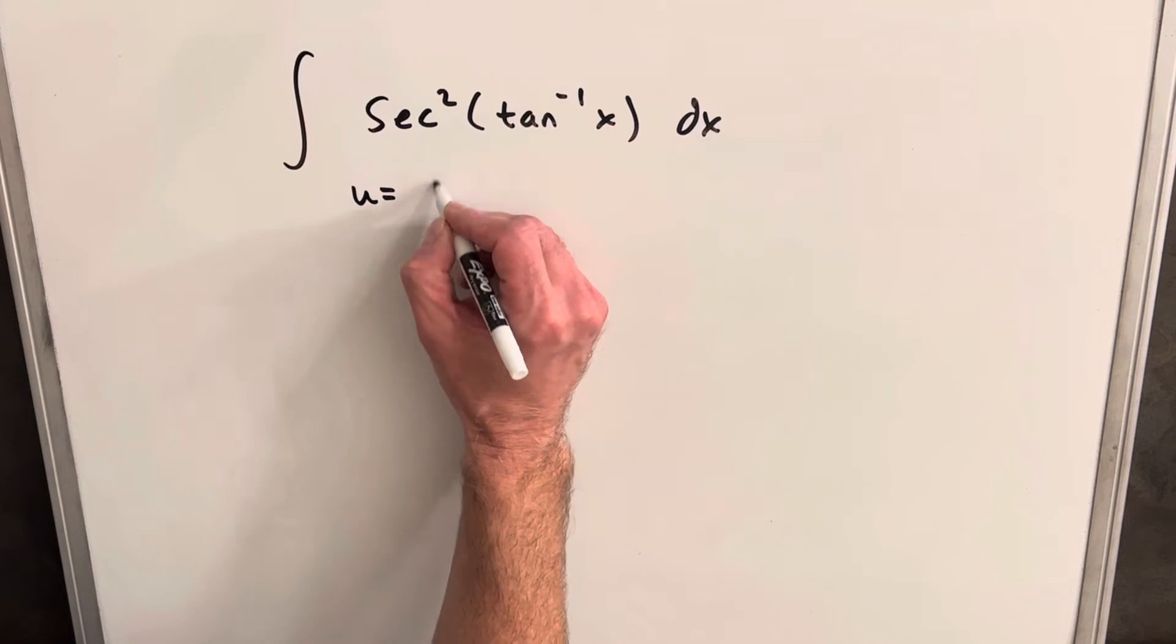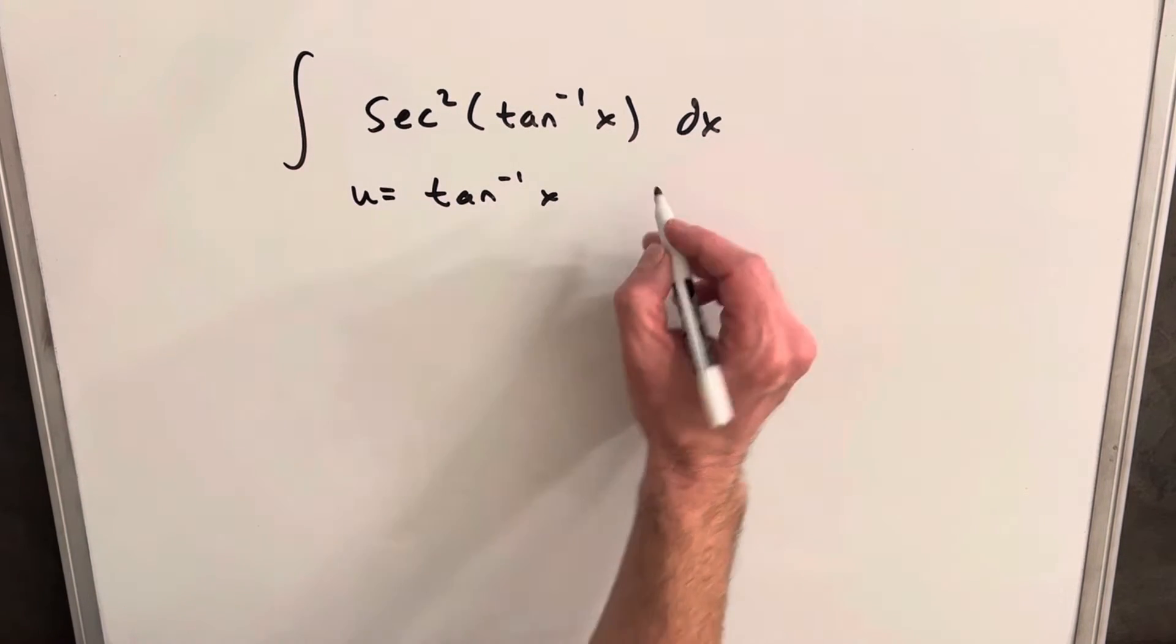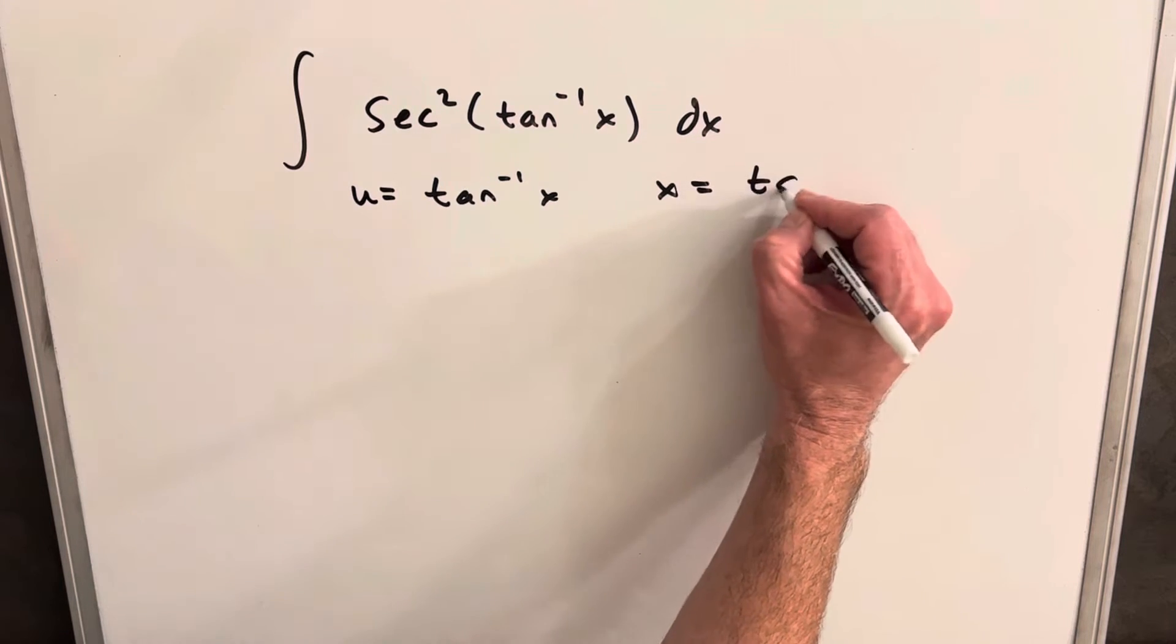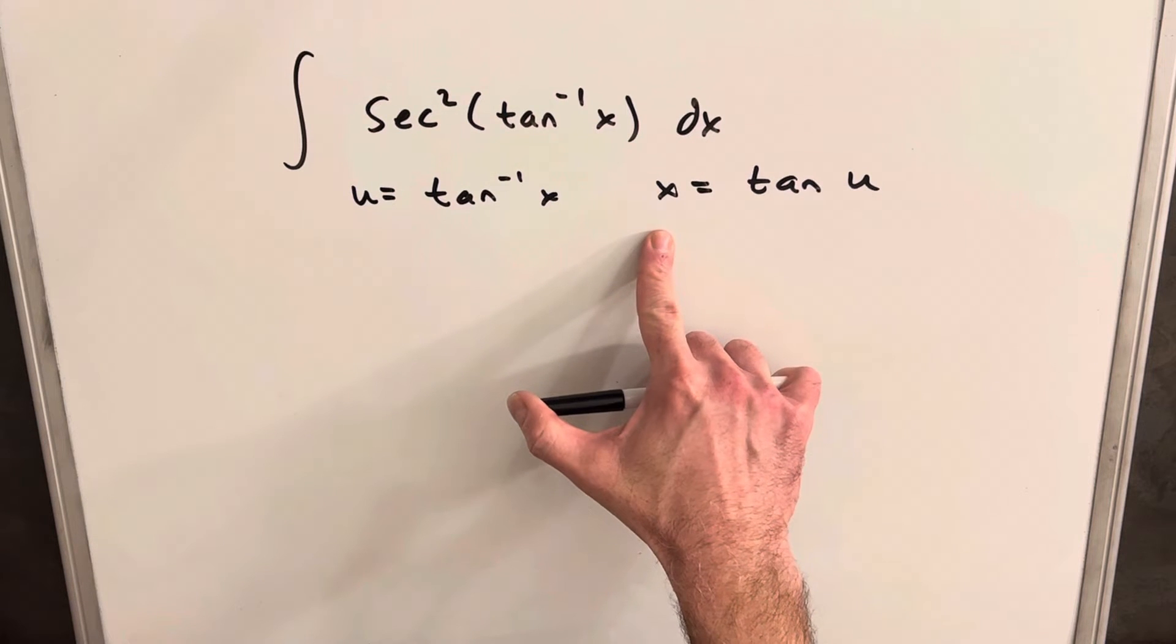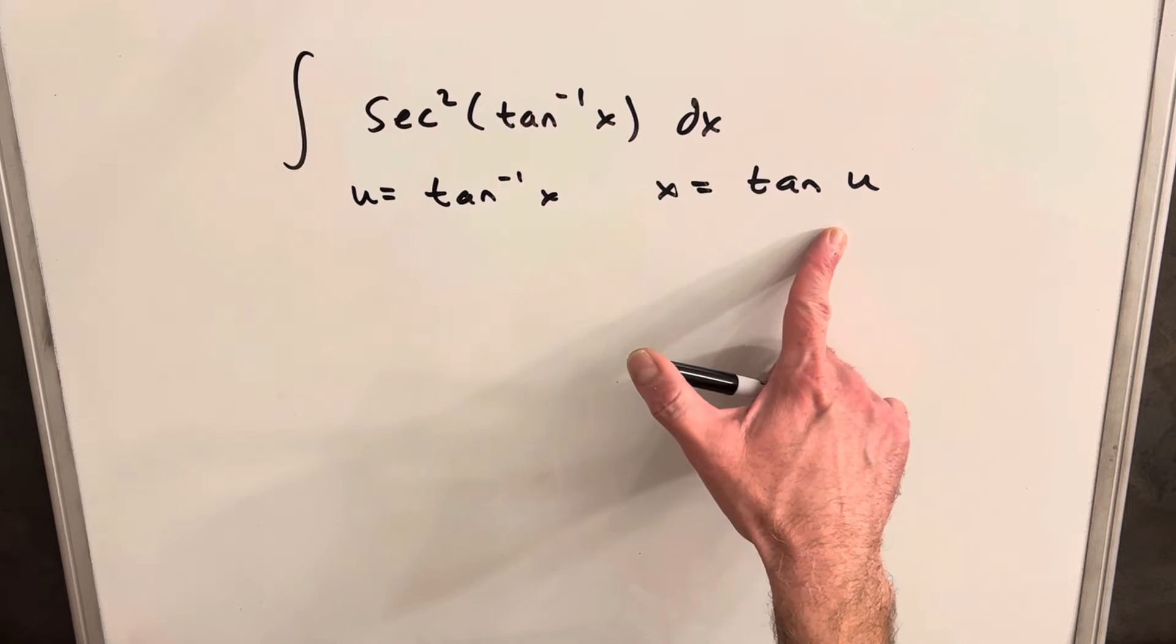So we're going to call our u tan inverse x, and then with this being inverse, we can rewrite this. We can write it in terms of x as x equals tan of u. Now from here we could find our dx, and it would be secant squared u,